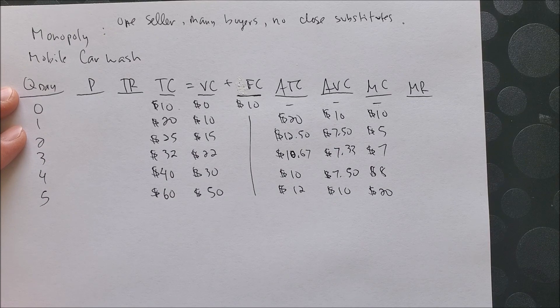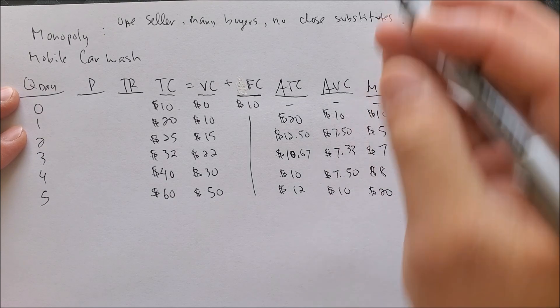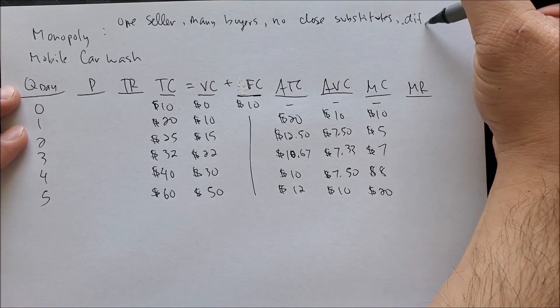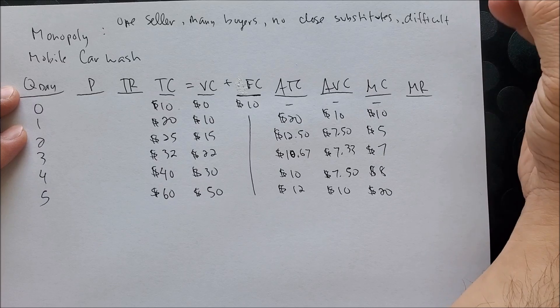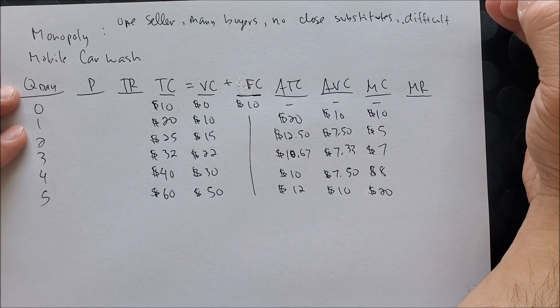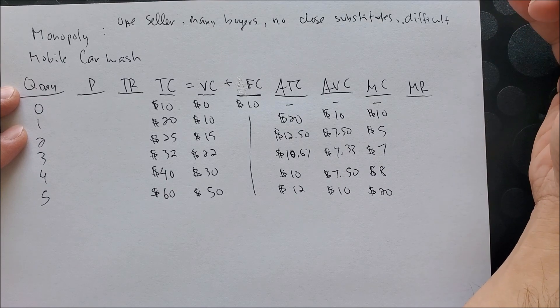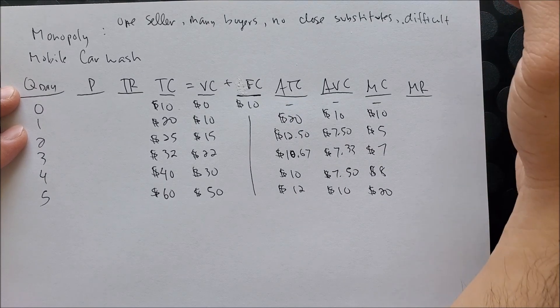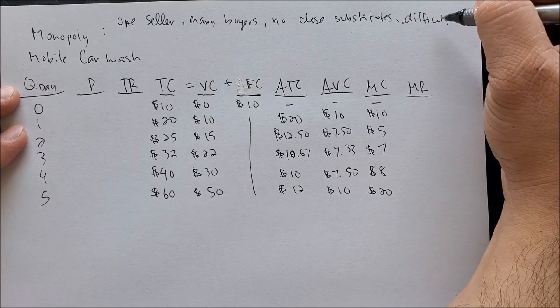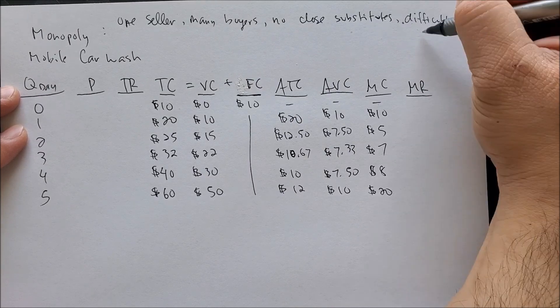Moreover, it's very difficult to enter the market. So for new firms who would like to sell this unique good, they would have to overcome the power of one seller, one producer, which can easily buy out or perhaps muscle its way with new producers coming in. So we can call this difficult to enter the market.